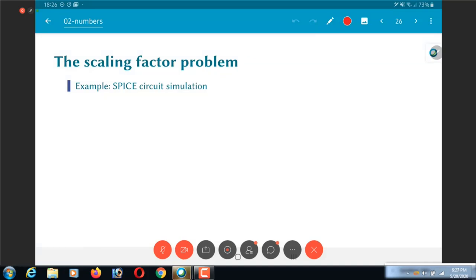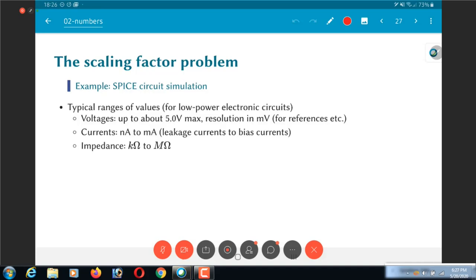Spice circuit simulation. The typical range of values that you would find when you are trying to represent an analog circuit: voltages which could be up to 5 volts maximum, possibly maybe only 1.8 volts or 1.2 volts, with the resolution of the voltage in the millivolts range because you might want to have some accurately specified reference voltages and so on.